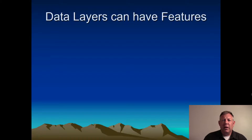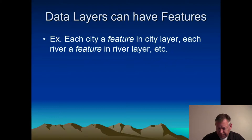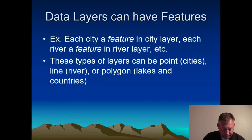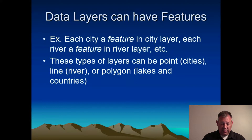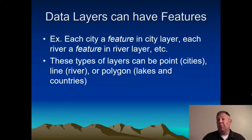There's some terminology I want to introduce because we're going to be using it all semester. Data layers can have features — features are just the parts that make up a data layer. For example, you might have a layer of cities where each city is a feature, or a layer of rivers where each river is a different feature. We have three major types of layers: point, polyline, and polygon. An example of a point shapefile would be cities; a polyline would be something like roads or rivers; a polygon is anything with a two-dimensional shape like a lake, a city block, or a field.